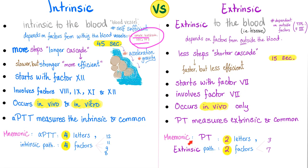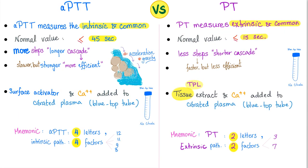Mnemonic: PT has two letters — the extrinsic pathway has two factors (factor 3 and factor 7). APTT has four letters — the intrinsic pathway has four factors (8, 9, 11, 12). PT measures the extrinsic and common pathway. PTT measures the intrinsic and common pathway. Normal PT is less than 15 seconds; normal PTT is less than 45 seconds.